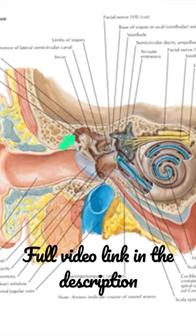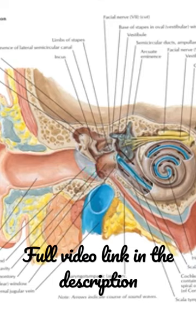The roof is wider than the floor and the anterior wall is narrower than the posterior wall. The medial wall and the lateral wall present a convexity towards the tympanic cavity, making the interior an hourglass constriction.